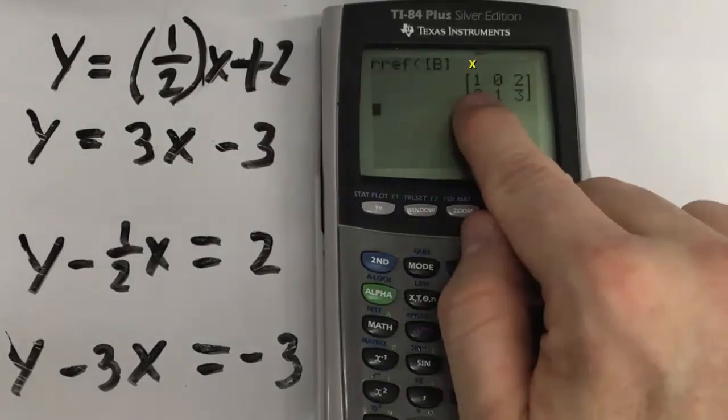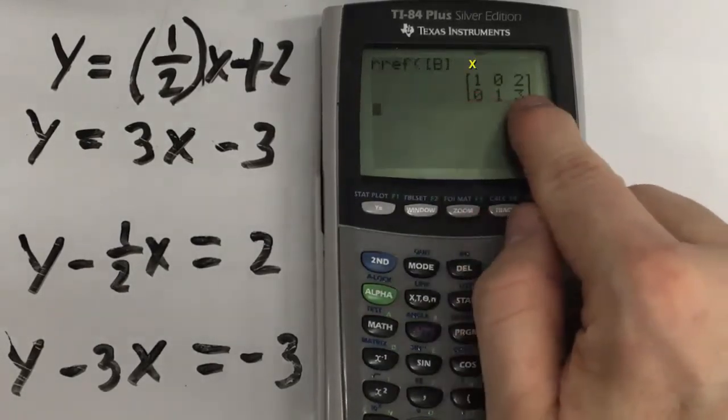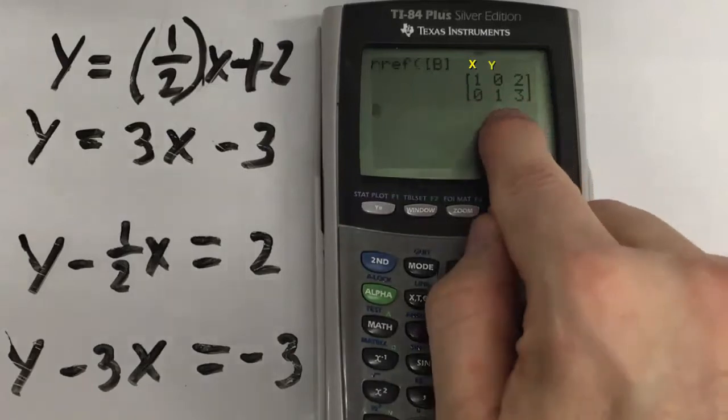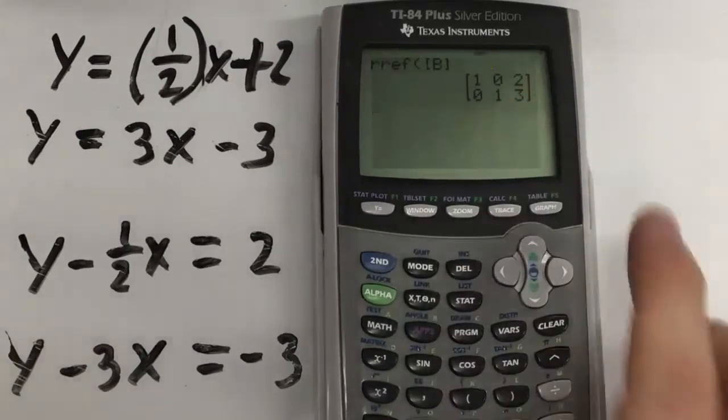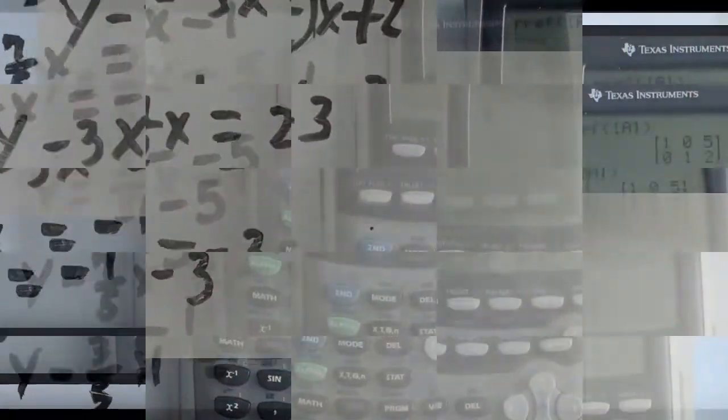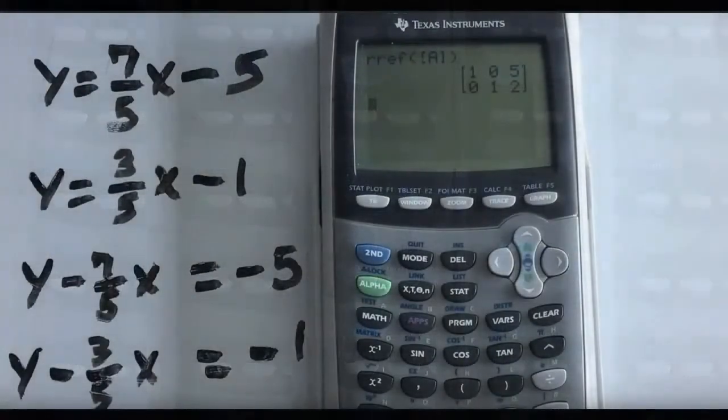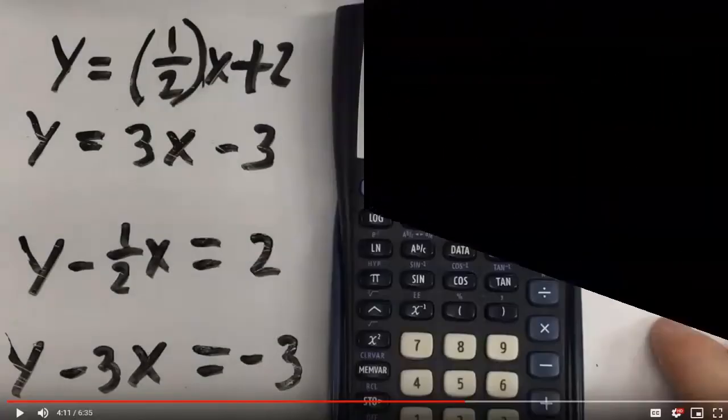And again, I did X first. So, X is 2. Y, which was second, is 3.